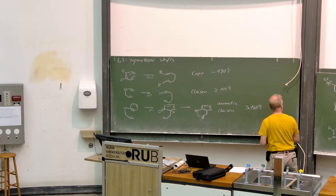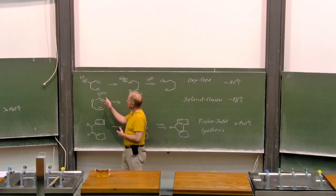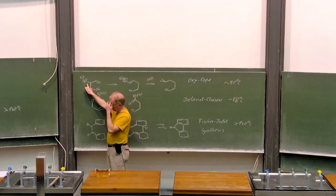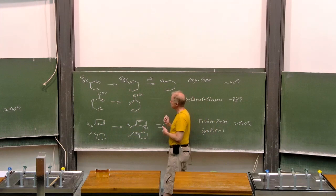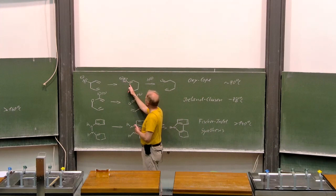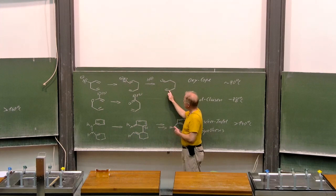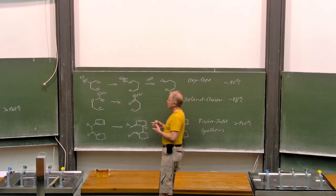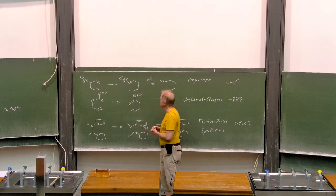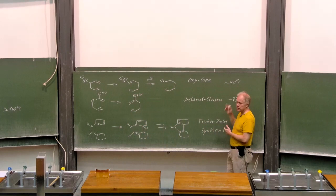So here we have additional examples. Again, the COPE system, this time with an alcoholate here in allyl position. This is called an oxy-COPE rearrangement, forming an enolate in the first step and after protonation, we end up with a delta-epsilon unsaturated carbonyl compound. This is more electron-rich than the COPE rearrangement and therefore it is observed that it takes place already at 70 degrees.